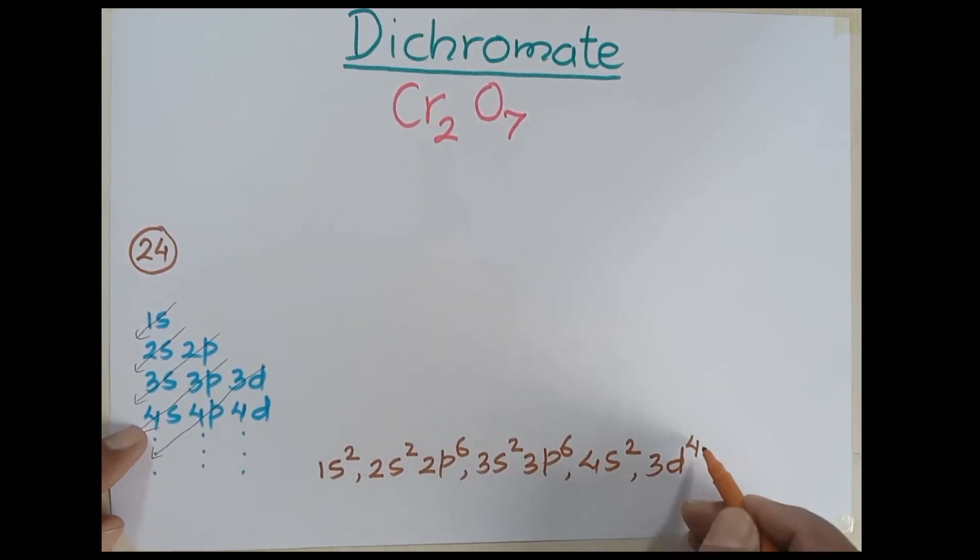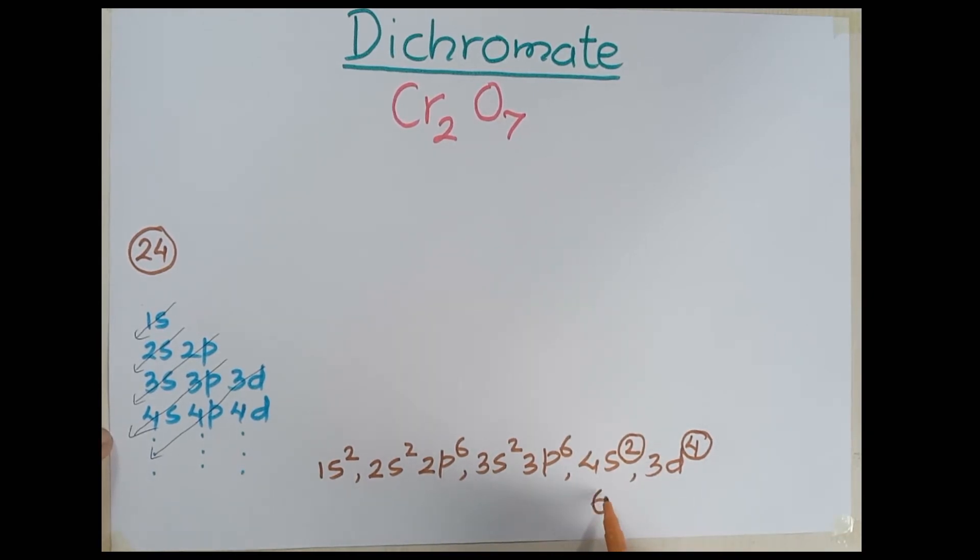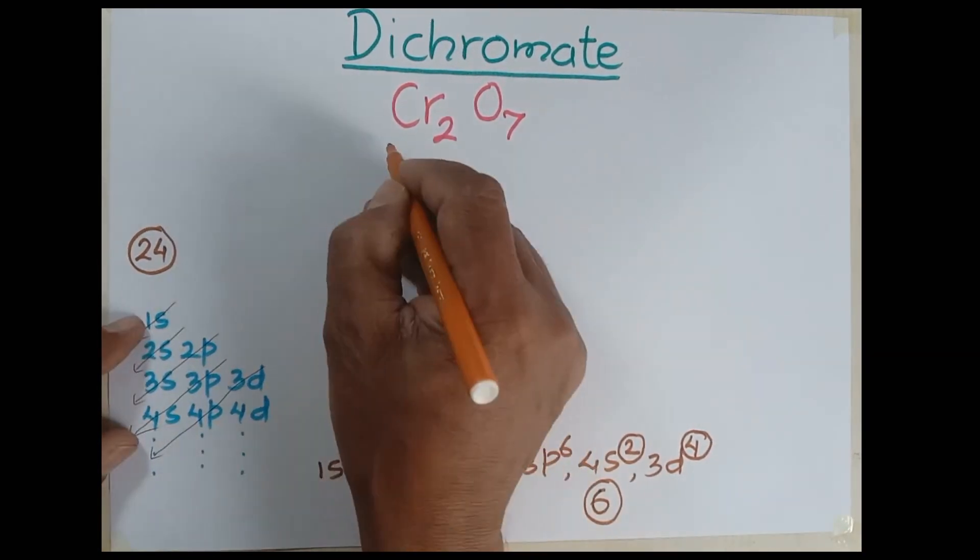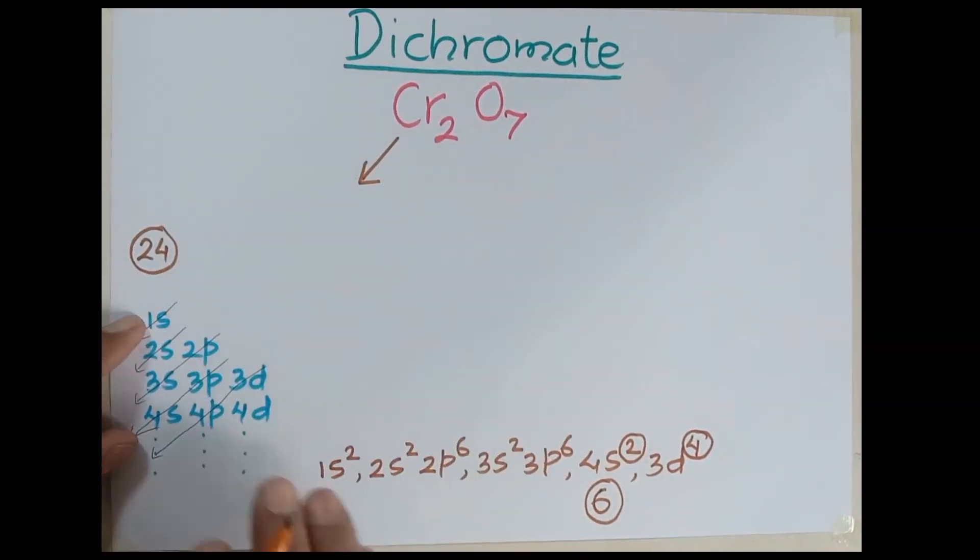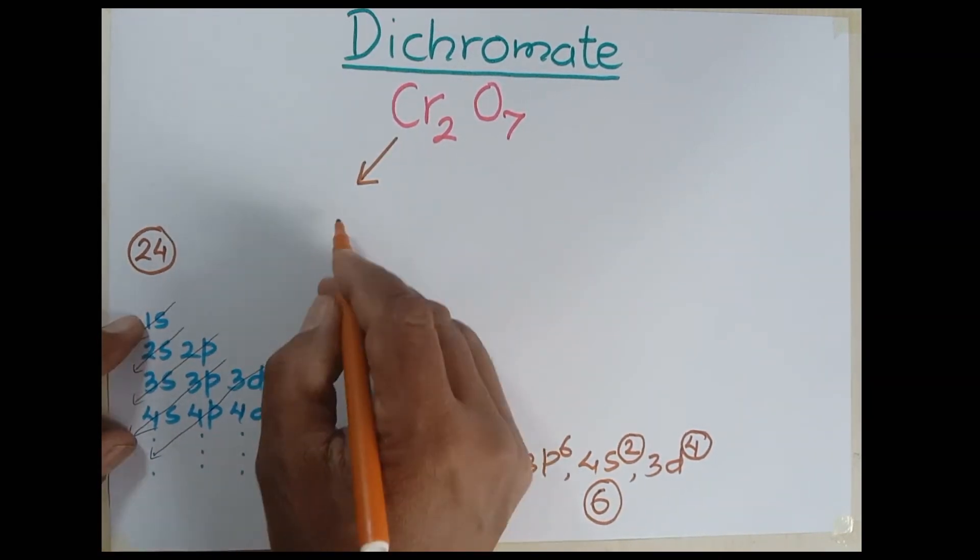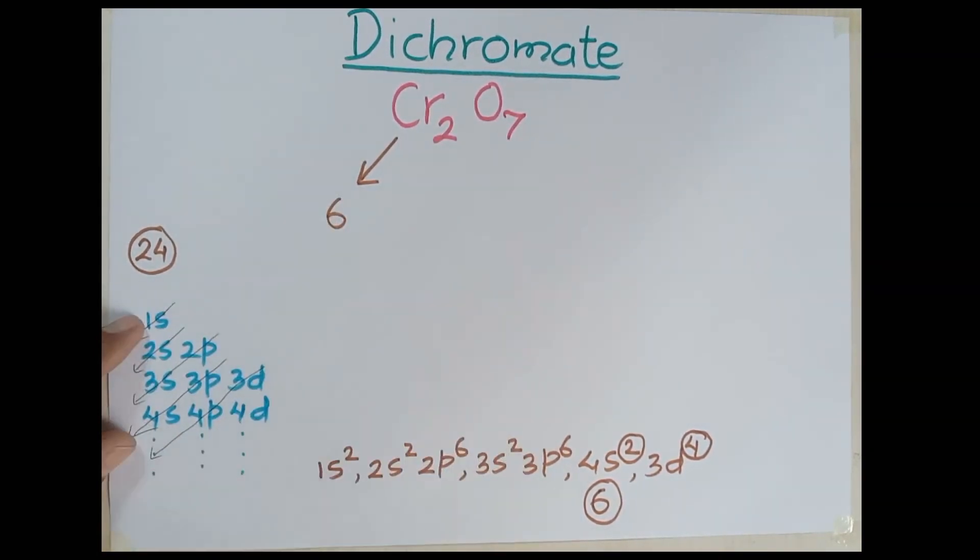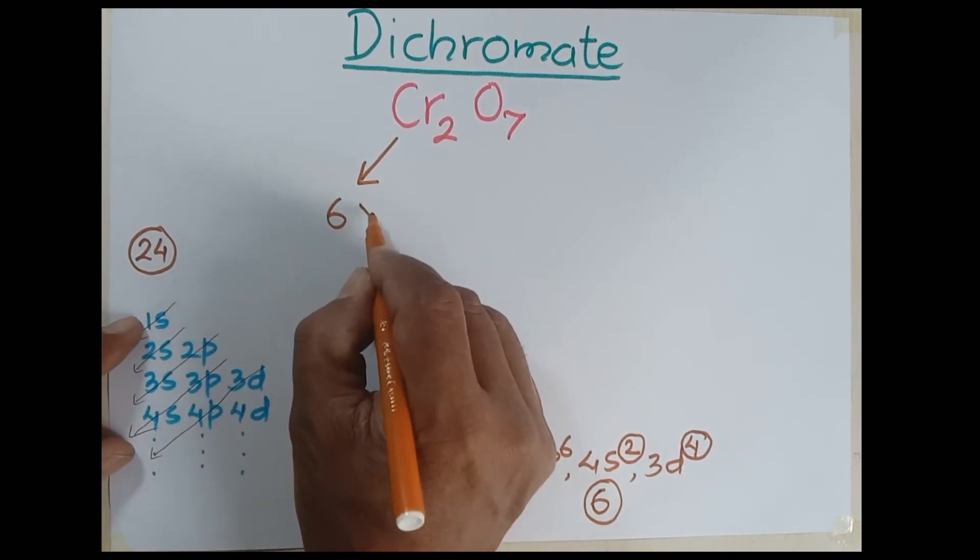The d sub-shell is not filled completely with electrons. In the same way, the outermost shell is not fulfilled with electrons, and the d sub-shell has four electrons. That's why there are six unpaired electrons in chromium. So if there are two atoms of chromium in dichromate and each contains six unpaired electrons, then altogether we have twelve unpaired electrons.